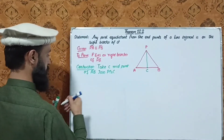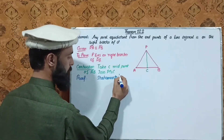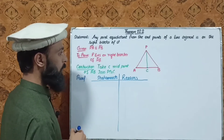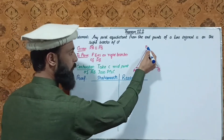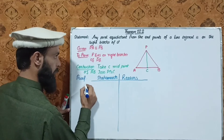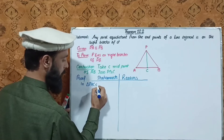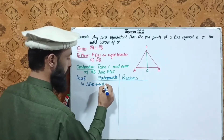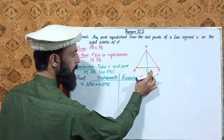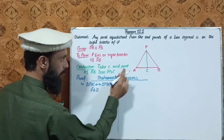Consider triangle PAC and triangle PBC. These two triangles correspond to each other. We will prove that triangle PAC is congruent to triangle PBC using the corresponding sides.